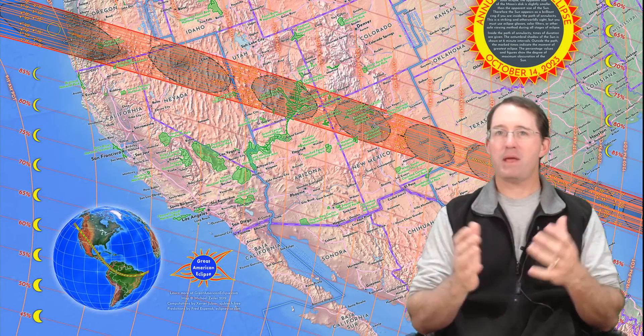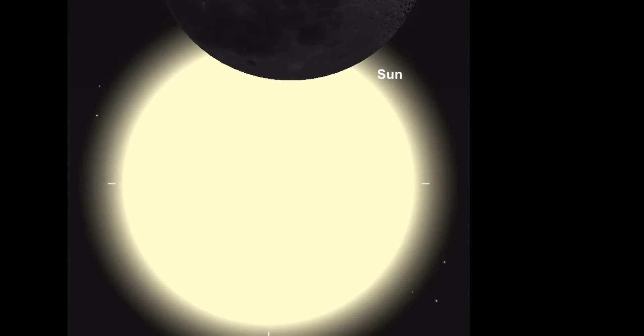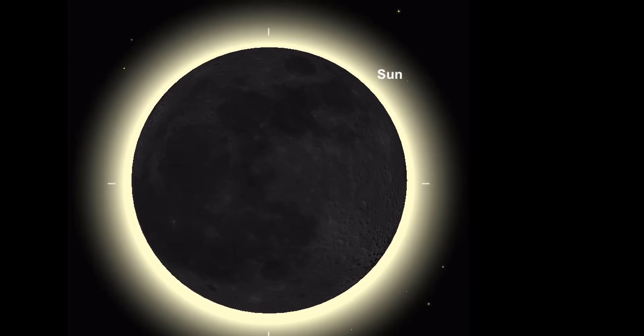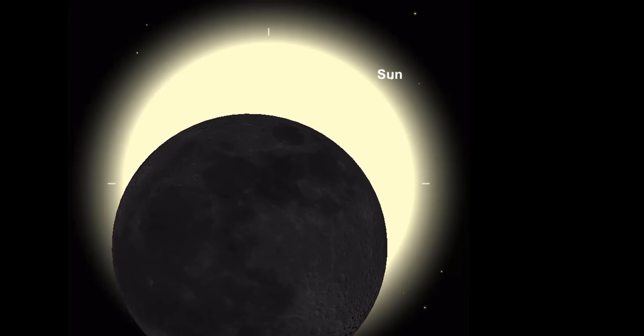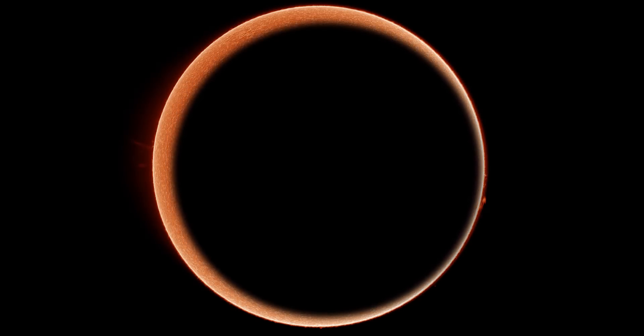So why bother being on that central path for annularity? Aren't you just seeing a partial solar eclipse no matter where you are? If you're on the centerline for an annular eclipse, then at the height of the event, you're going to see the moon perfectly silhouetted against the sun. The centerline is also when annularity will last the longest — just under 4 minutes and 50 seconds for 2023. The further you get from the centerline, the more the moon will shift to one side. It'll still be completely in front of the sun, just not centered. If you're just outside of the path of annularity, the sun will still be up to 89-point-something percent obscured, but you'll never get that ring of fire effect.